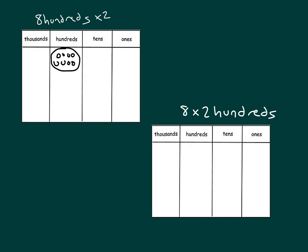I will group that together. That's 8 hundreds, but it says times 2. So I can make another group of 8. How many is that altogether? That's 8, 16, or 16 hundreds. Let's write that out. 16 hundreds, right? And 16 hundreds is equal to 1,600.